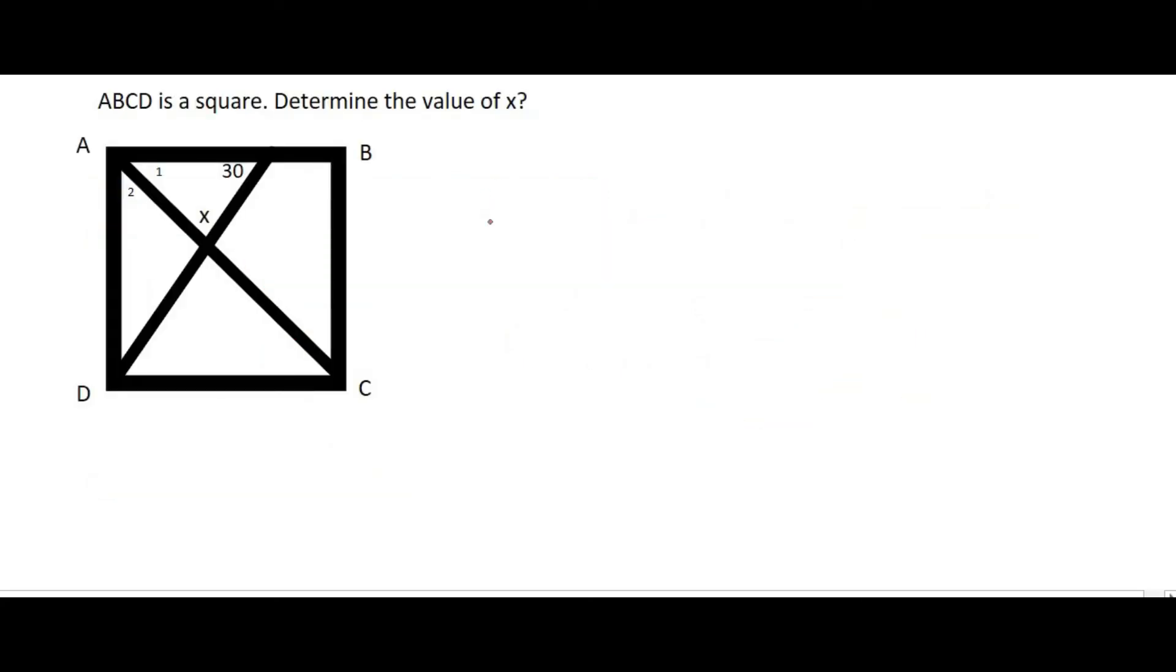And so, here's our last question for this lesson. They tell us that ABCD is a square, and they say determine the value of x. What I would like to show you, though, is that this line over here is not a diagonal, because it does not go from the one corner up to the other corner.